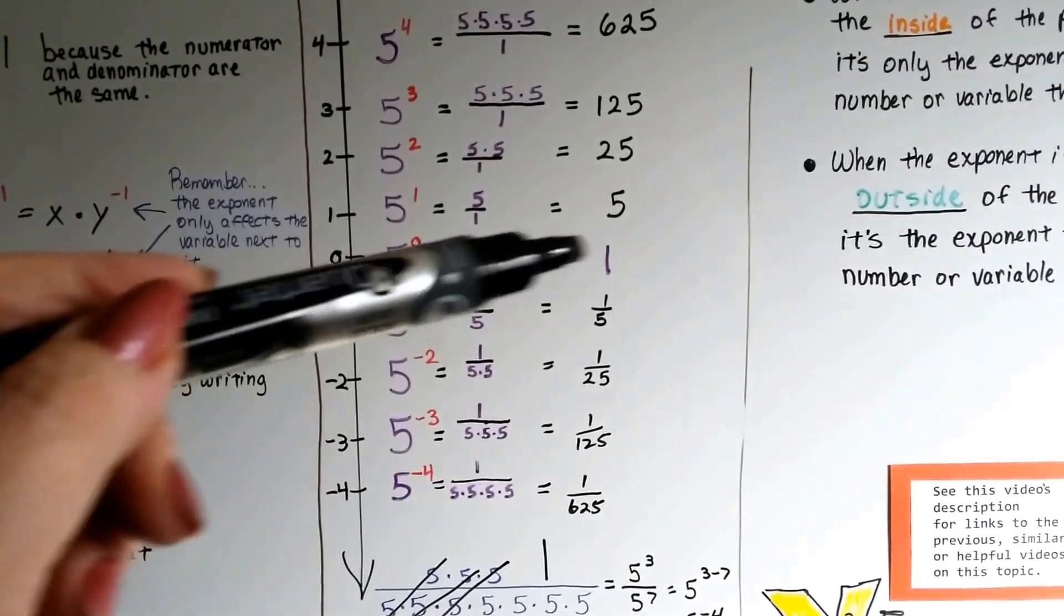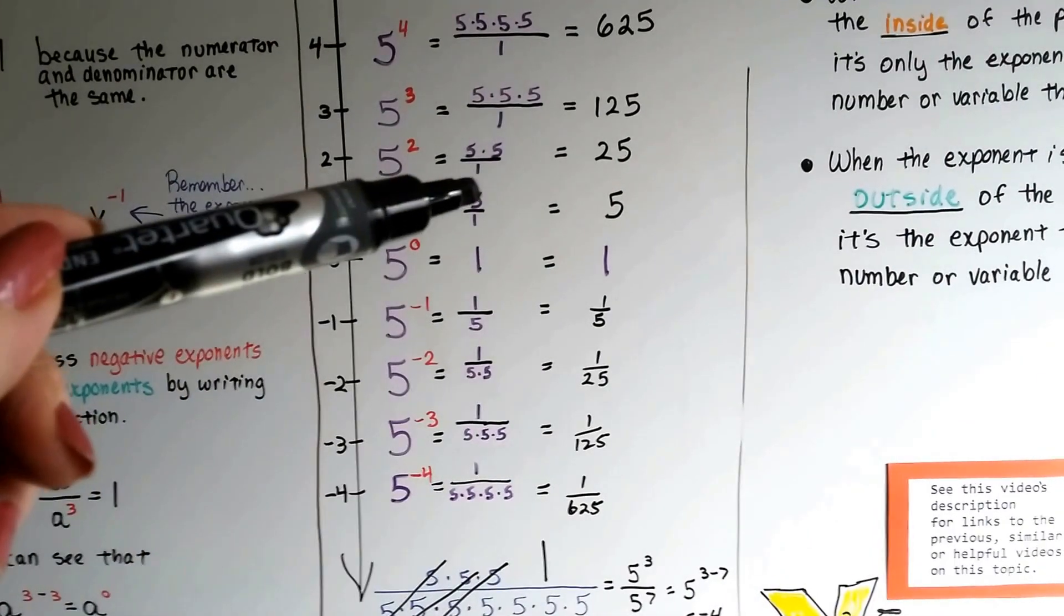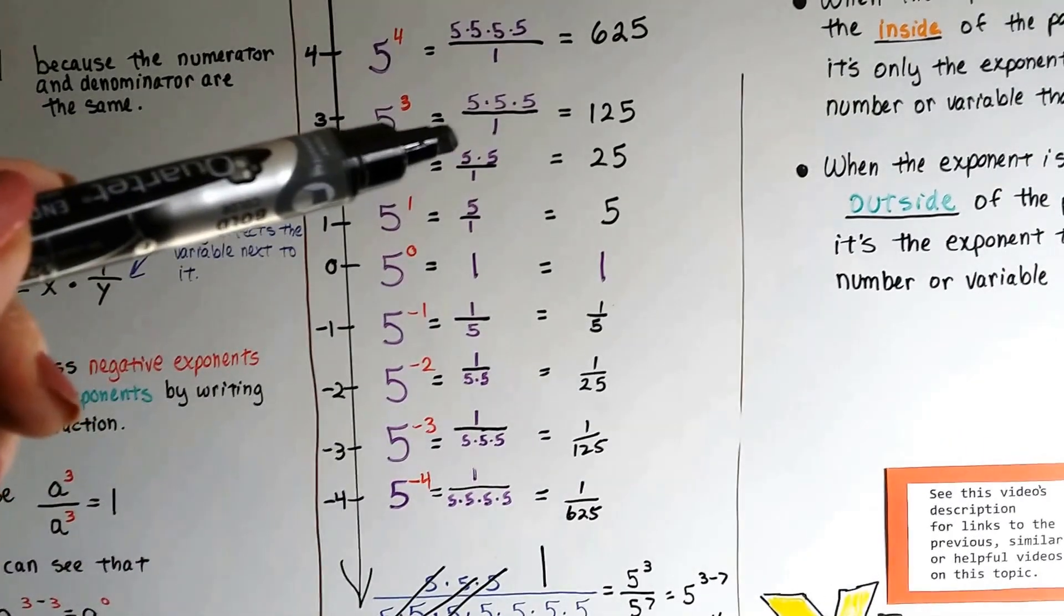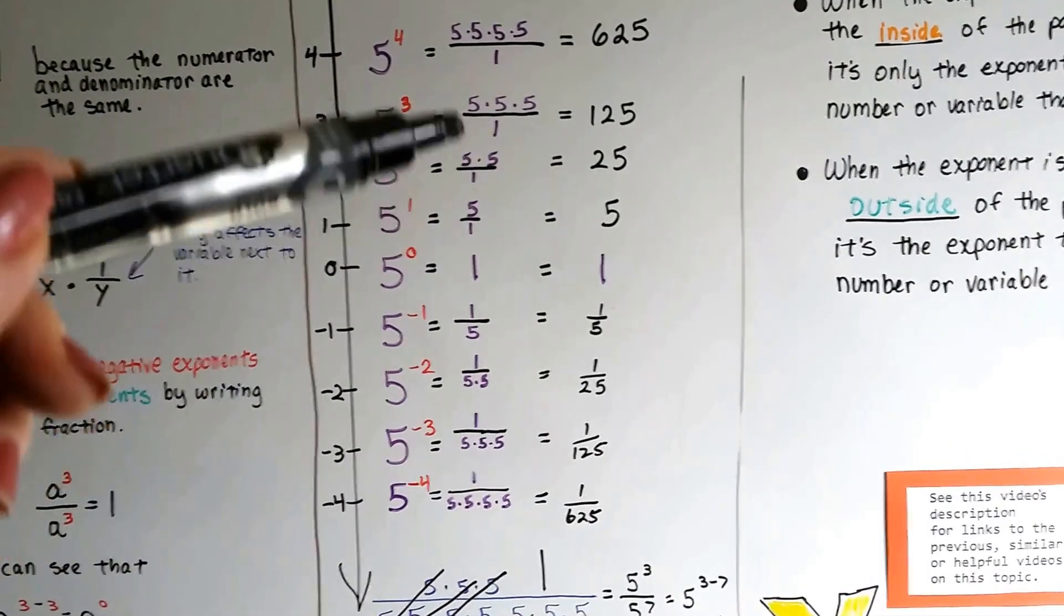So 5 to the 0 power is a 1. 5 to the first power is 5 over 1, or 5. 5 to the second power is 5 times 5 over 1, or 25, and it keeps going up.